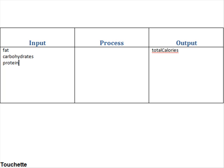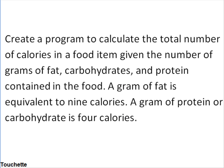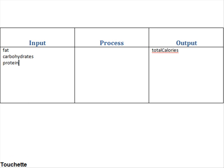The last thing we have to do is figure out our process — how do we calculate the total calories? We'll have several processes here. First, we have a calculation for each of the three different sources of calories: fat, carbohydrates, and protein. Let's look at fat first, which would be equivalent to 9 calories per gram. So the total number of fat calories would be equal to the number of fat grams times 9, as stated in the problem.